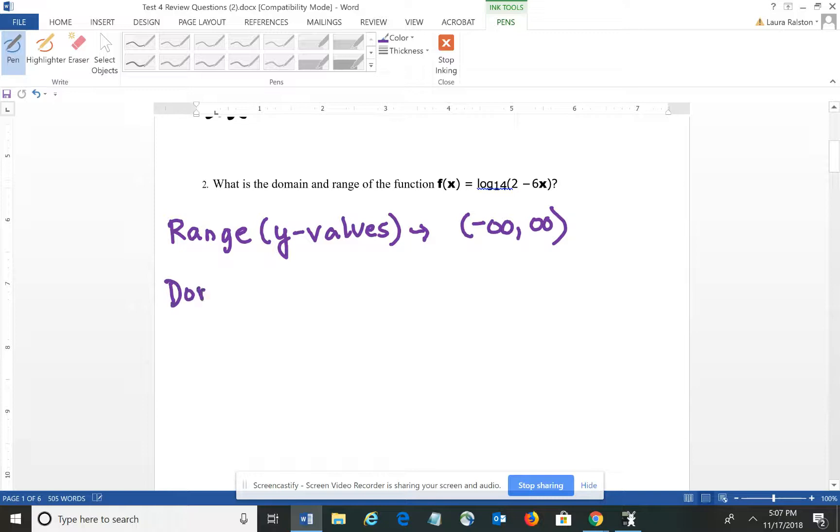The domain of a logarithmic function, which corresponds to the X values, has to do with the argument. For the domain, the argument of a logarithmic function must be positive. You may say, well, what's the argument? The argument is actually the expression in the parentheses here – the 2 minus 6X, whatever you're taking the log of is your argument.